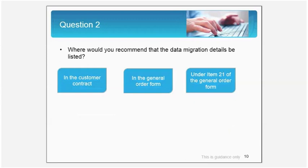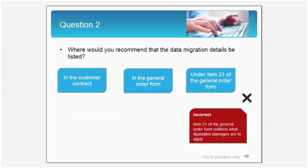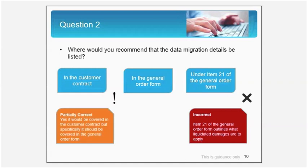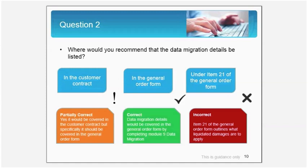Now we need to start thinking of some of the elements which will make up the contract, keeping in mind the requirements of the job at hand. Given that one of the requirements was data migration, where would you recommend that the data migration details be listed? Would it be in the customer contract or the general order form or under item 21 of the general order form? Item 21 would be incorrect as it outlines what liquidated damages are to apply. If you chose the customer contract, that would be partially correct. The correct answer is the general order form. Data migration details are well covered in the general order form module 9.